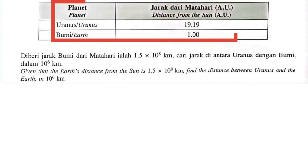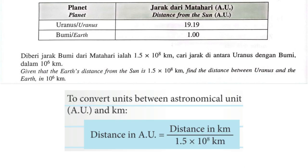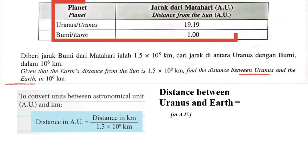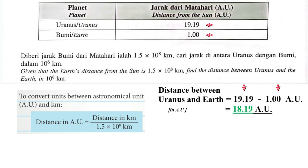The table shows the distances of Uranus and Earth from the Sun. Given that the Earth's distance from the Sun is 1.5 x 10 to the power of 8 km, find the distance between Uranus and the Earth in 10 to the power of 6 km. The answer is 18.19 AU.